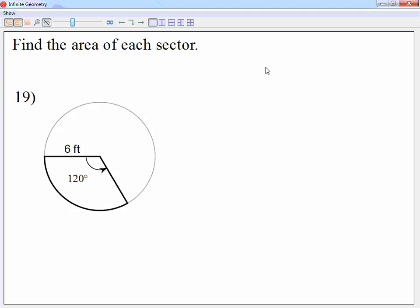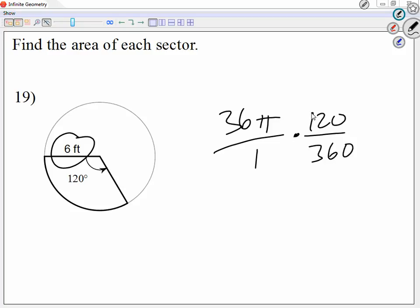So the area of the circle to begin with, I know the radius is 6. So the area of the circle is 36π over 1. Alright, I'm going to write it as a fraction. Keep in mind I'm keeping pi as pi, not as a decimal. And I'm going to multiply this by how much of the circle we have. We have 120 out of 360 degrees. So if you have a calculator that does fractions, just multiply the fractions.